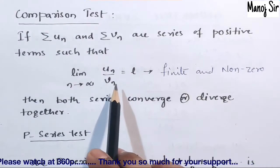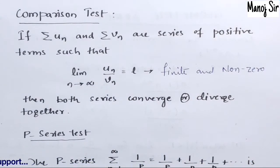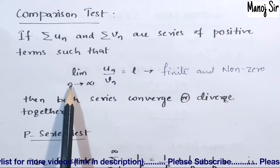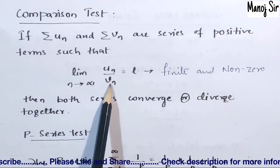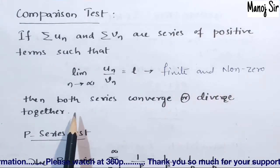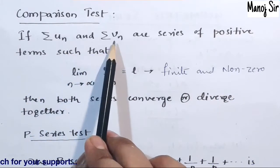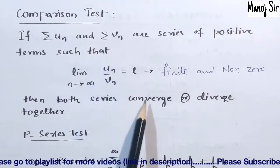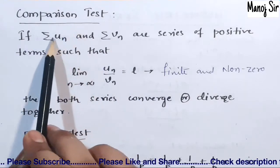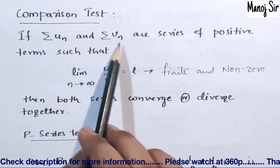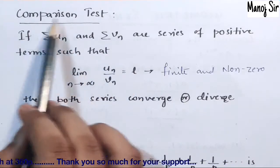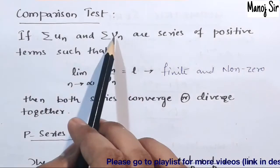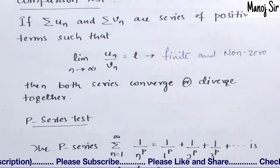We will see how to find u_n and v_n when we solve a problem later in this video. If the limit of u_n upon v_n is finite and nonzero, then summation u_n and summation v_n both converge or diverge together. If summation v_n is converging, then summation u_n is also converging; if summation v_n is diverging, then summation u_n is also diverging.